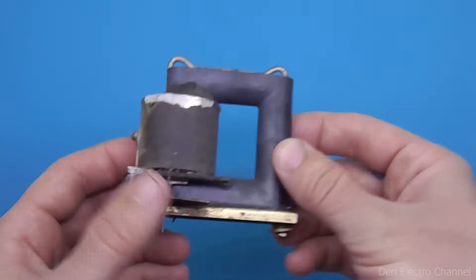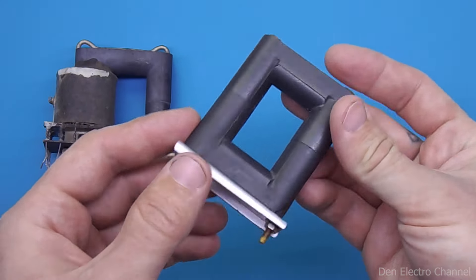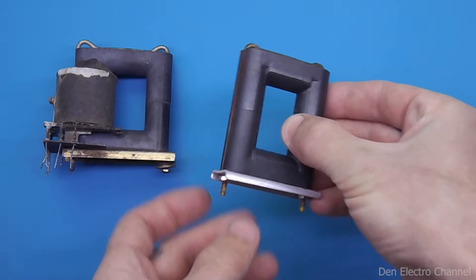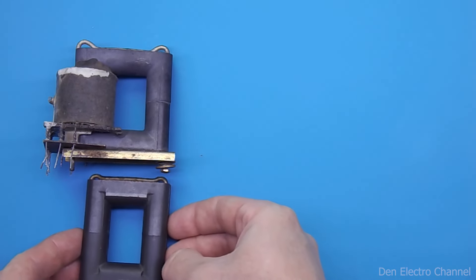I showed this transformer at the beginning, and for my power supply I used this core. They look almost similar, the cross sectional area of the magnetic core is the same. But the length of the magnetic core is different.